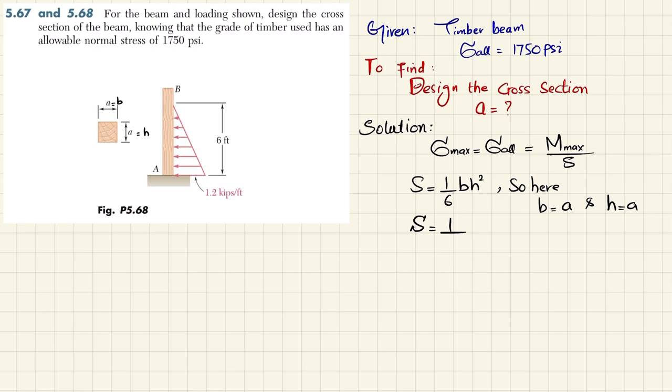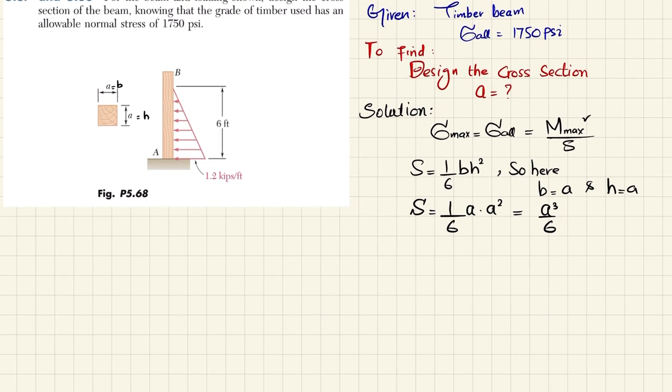square cross-section is 1 over 6 a into a squared, which is again a cubed by 6. We do not have maximum bending moment, so what we will do is if you remove this support, definitely you will be having a force horizontal force that is in opposite to this direction, and let this